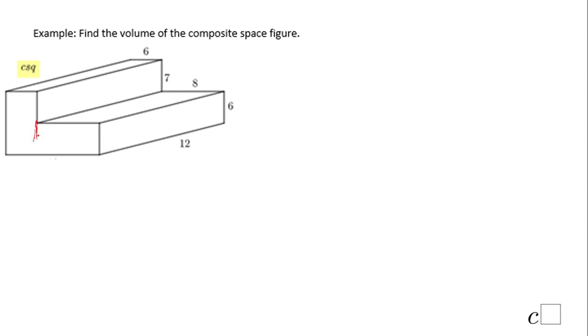If you notice what I do here, we have two rectangular prisms. You can find the volume of each one and then add them up. That is one way.